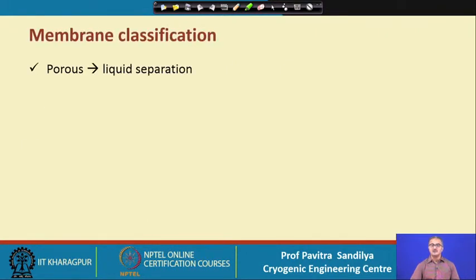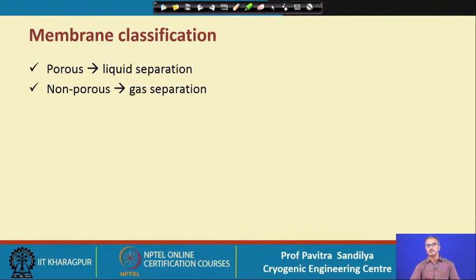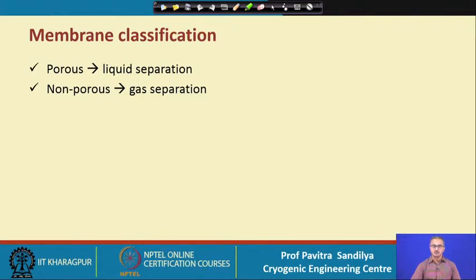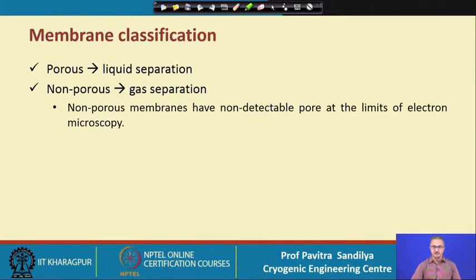There are various ways to classify membranes: porous and non-porous. Porous membranes are used when molecular sizes are larger and are used for liquid separation. Non-porous membranes are used when molecular sizes are smaller and are used for gas separation. We shall focus only on gas separation, that is, the non-porous type of membranes.